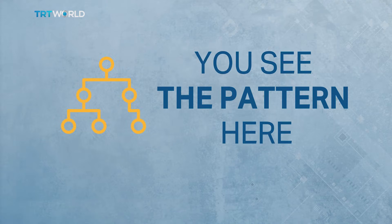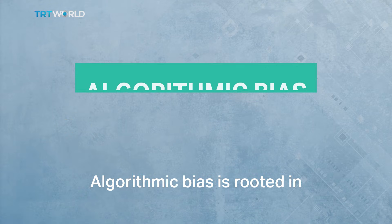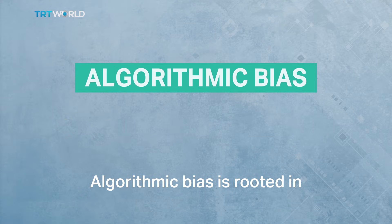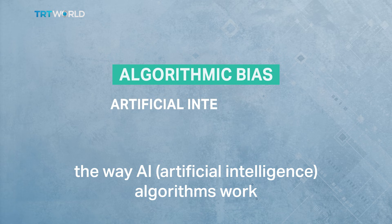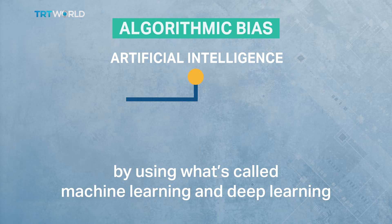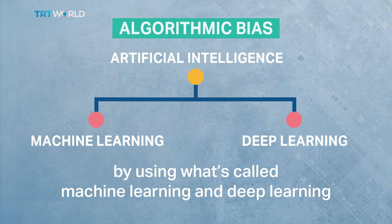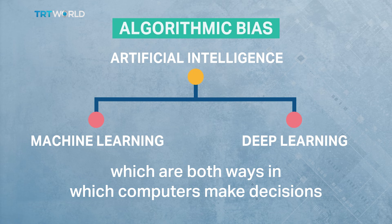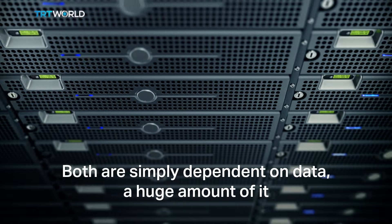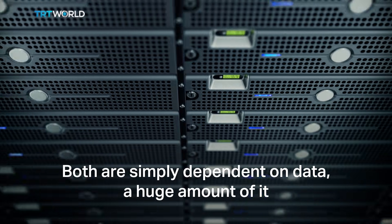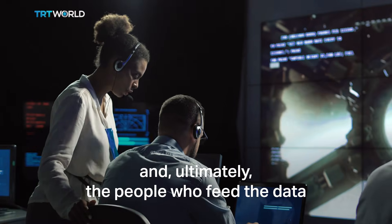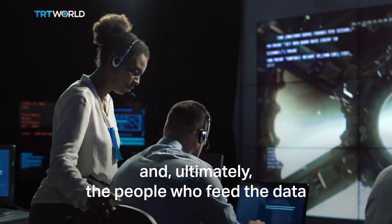You see the pattern here? Algorithmic bias is rooted in the way AI — artificial intelligence algorithms — work, by using what's called machine learning and deep learning, which are both ways in which computers make decisions. Both are simply dependent on data, a huge amount of it, and ultimately the people who feed the data.